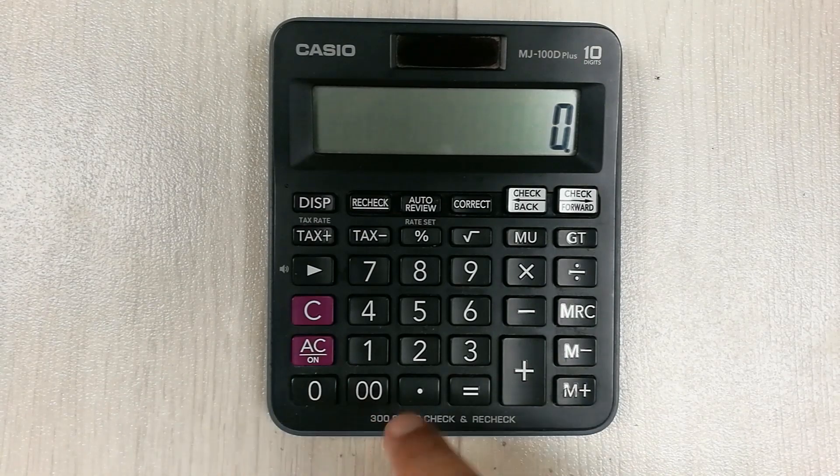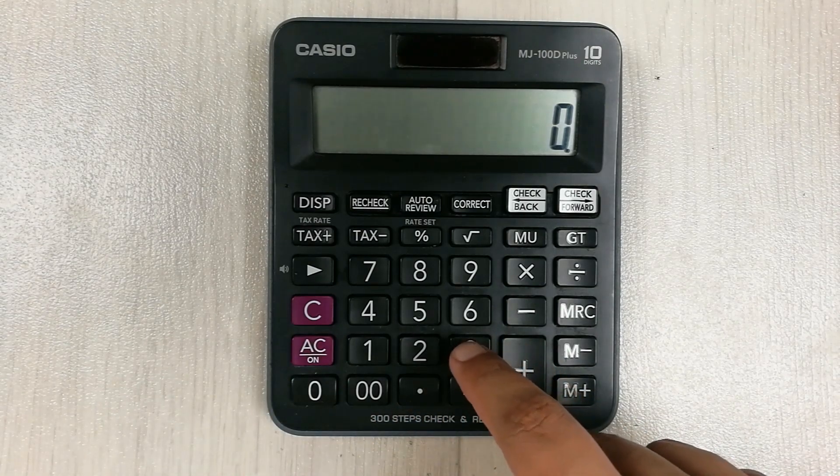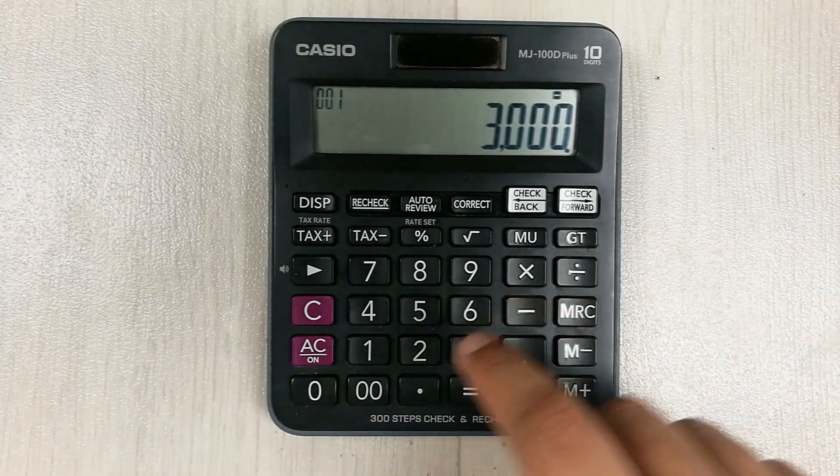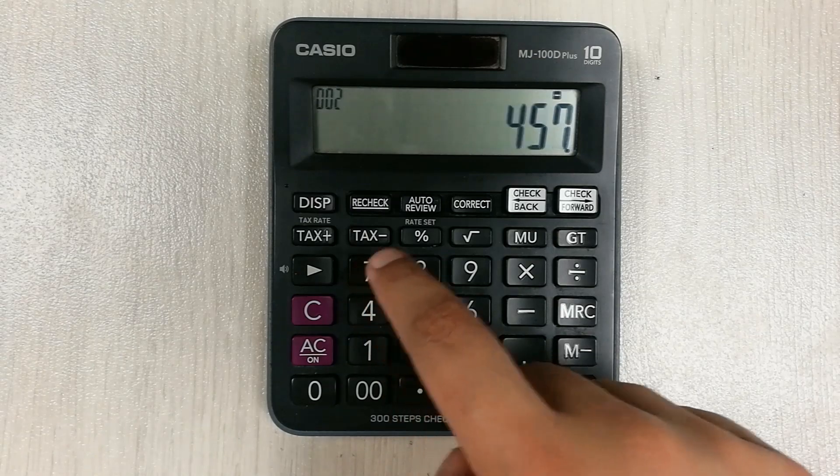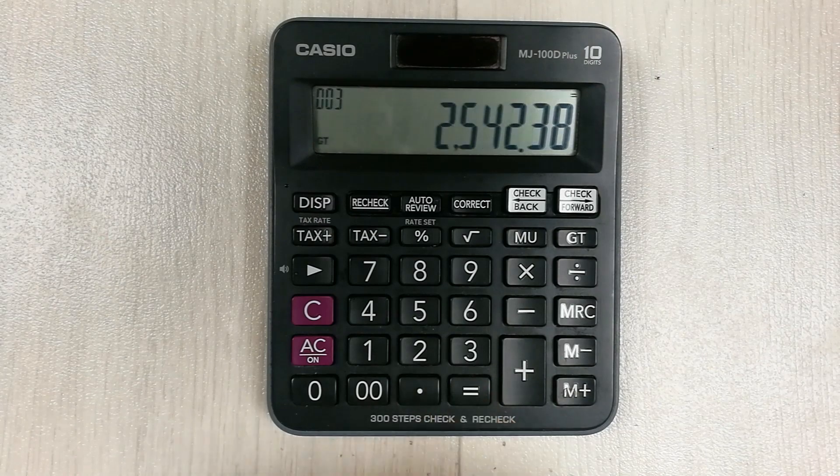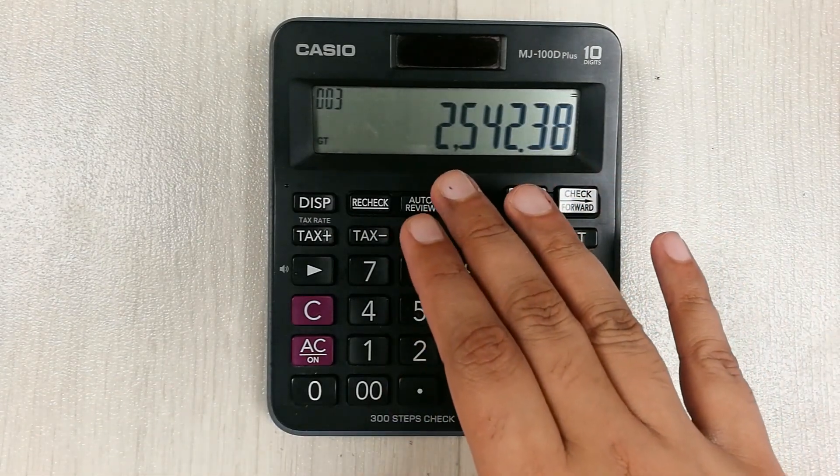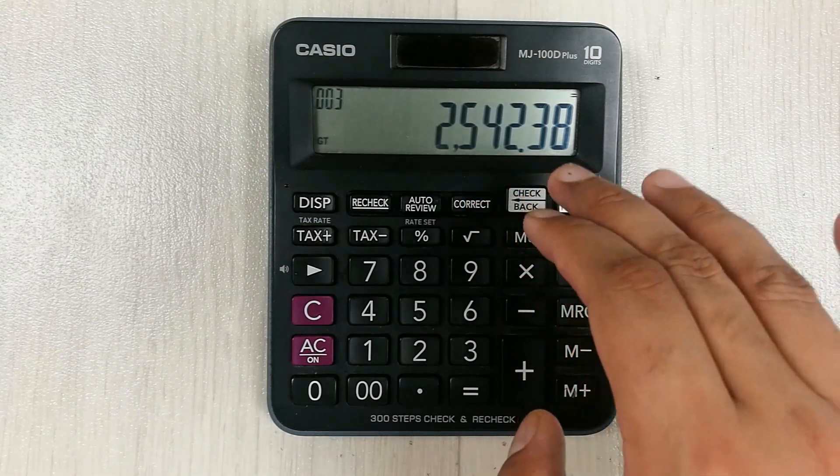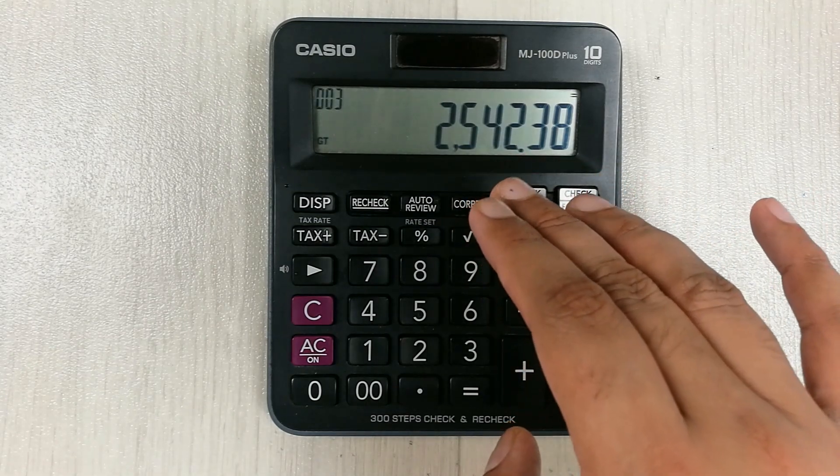Now we will move to the third step in which we subtract this 3000, we minus this 3000 with 457.62. And then we press the equal button. So our final answer is 2542.38.